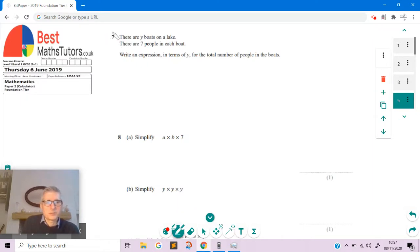Moving on, I'm going to do questions seven and eight, and then I'll break this down into different videos. Question seven says there are Y boats on a lake. That means Y represents a number. So Y is a number of boats. There's seven people in each boat.